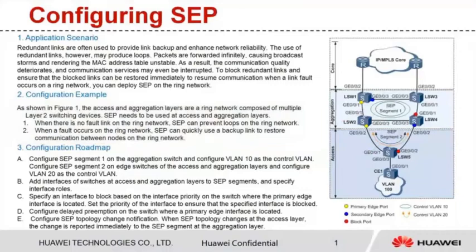Let's look at the configuration roadmap. Based on the networking diagram, perform the following configurations. Step A, configure basic SEP functions such as the SEP segment ID, control VLAN and protected instance. Step B, add a switch interface to an SEP segment and specify the interface role.